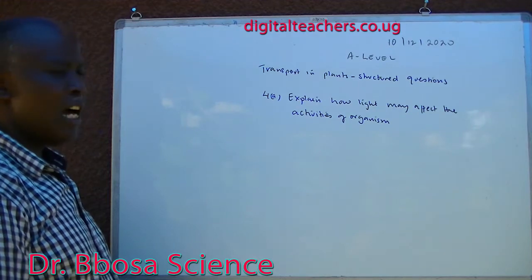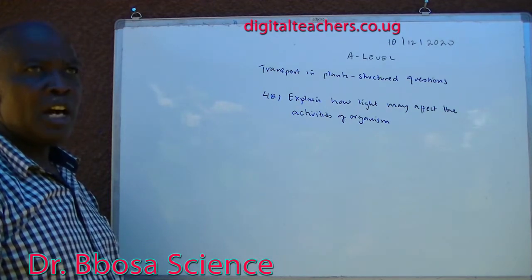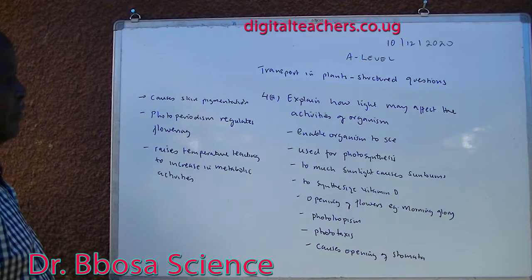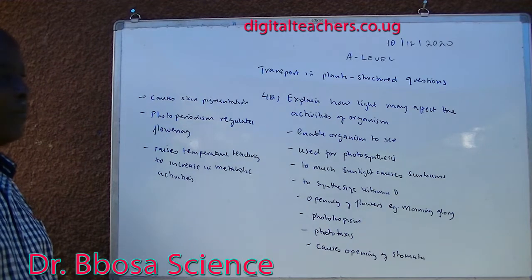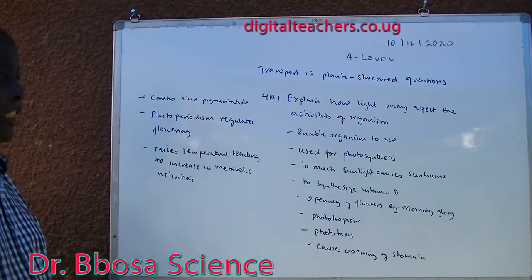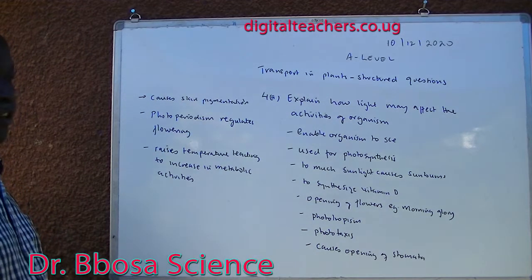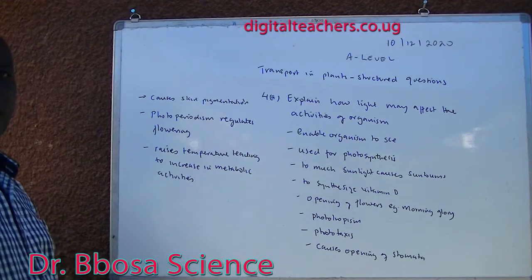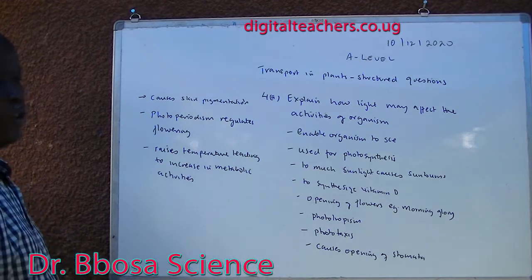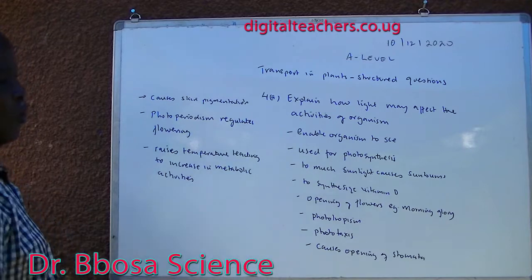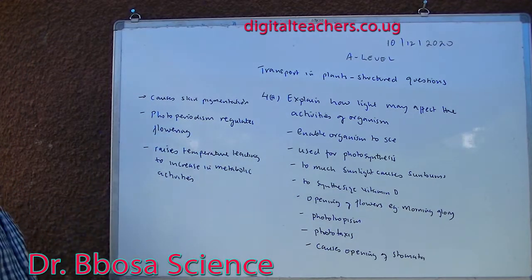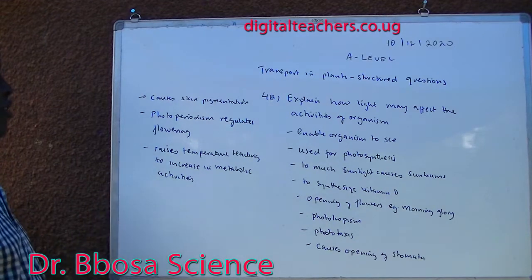Four A: explain how light may affect activities of organisms. Light enables organisms to see; it is used for photosynthesis; too much sunlight causes sunburn; it is used in synthesis of vitamin D in the skin; opening of flowers, for example morning glory; photoperiodism; growth of shoot towards light; phototaxis — movement of organisms towards or away from light; causes opening of stomata; causes pigmentation; photoperiodism regulates flowering. Light raises temperature, leading to increase in metabolic activities.